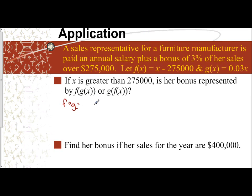I'm going to take and plug in 0.03x wherever I see my x variable. So it's x minus $275,000. And so I'm going to have, instead of x, 0.03x. So f(g(x)) equals 0.03x minus $275,000.